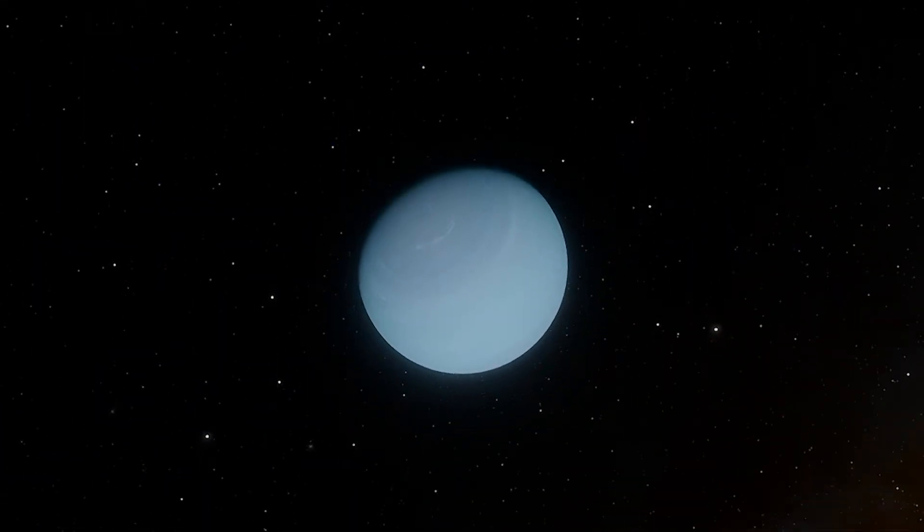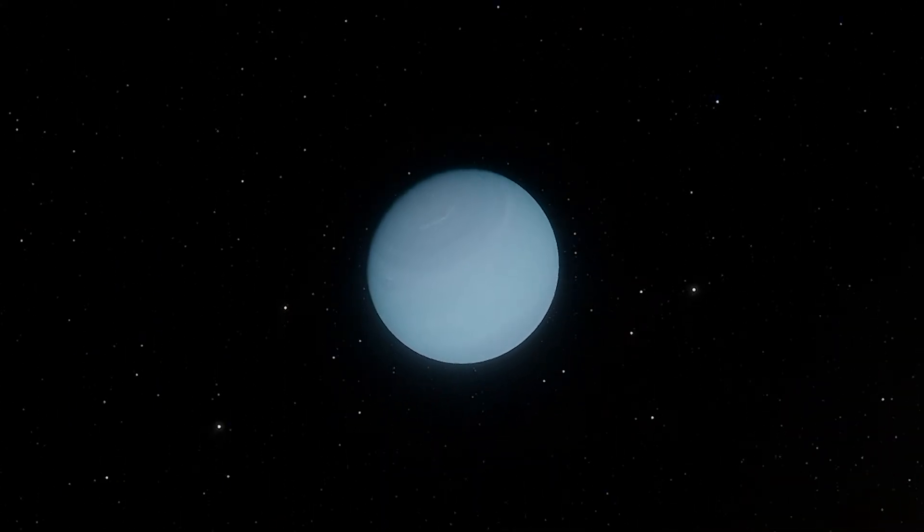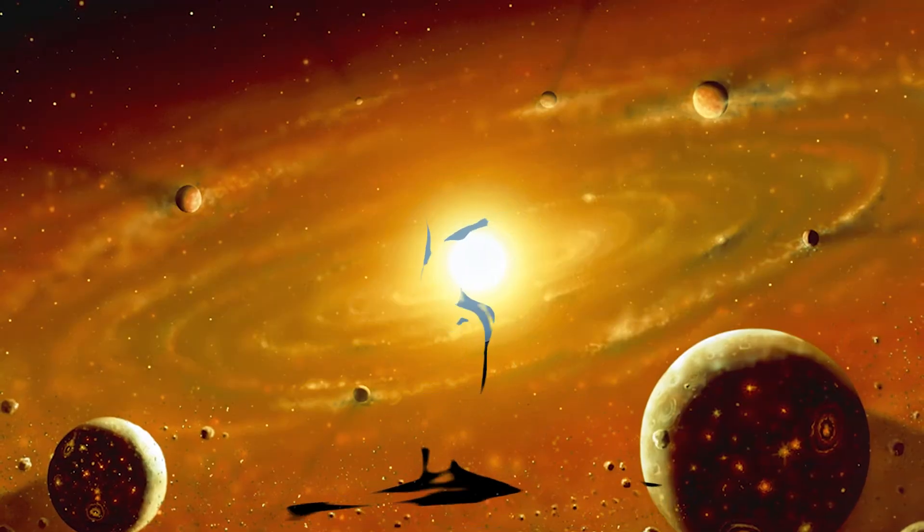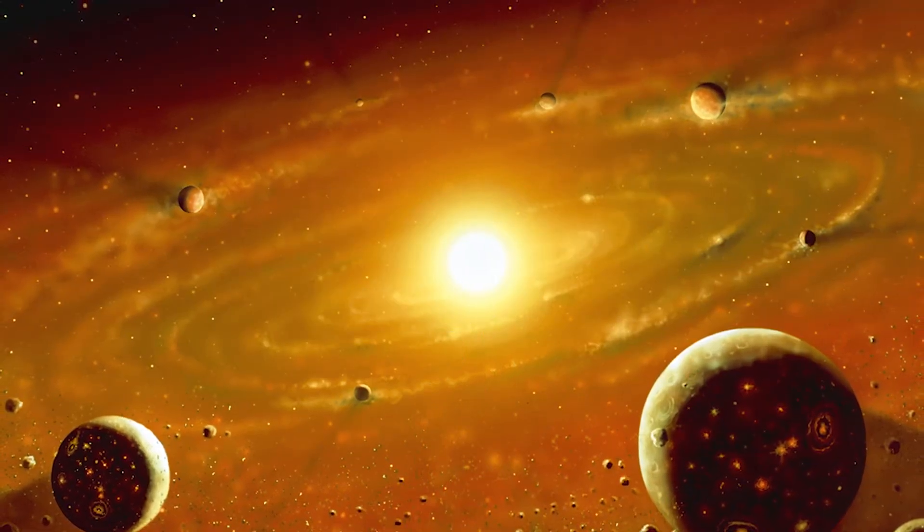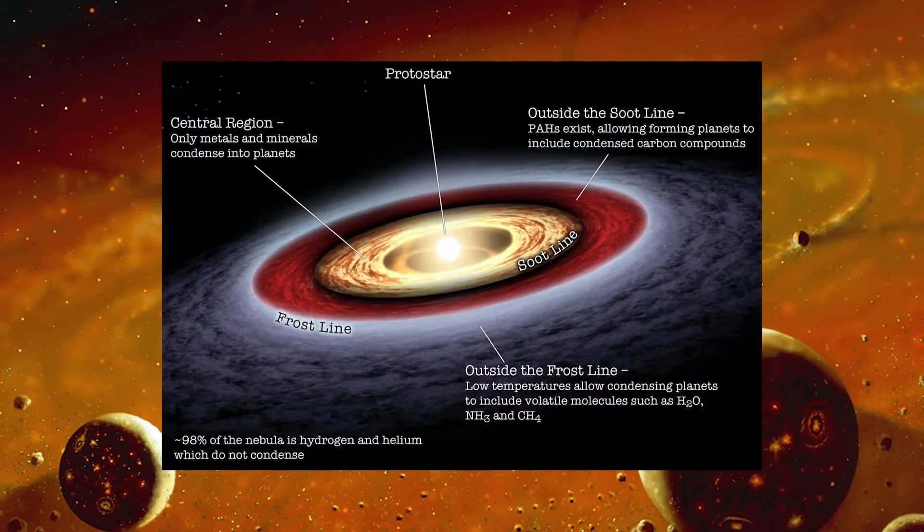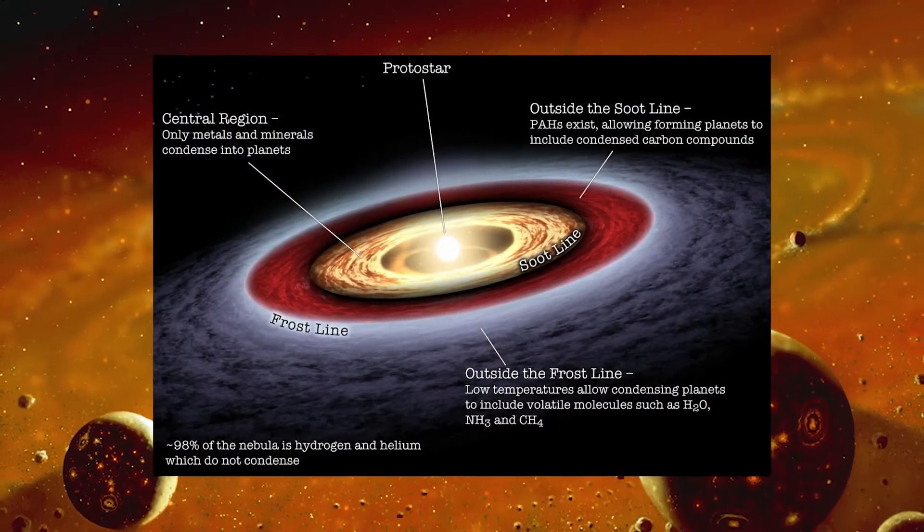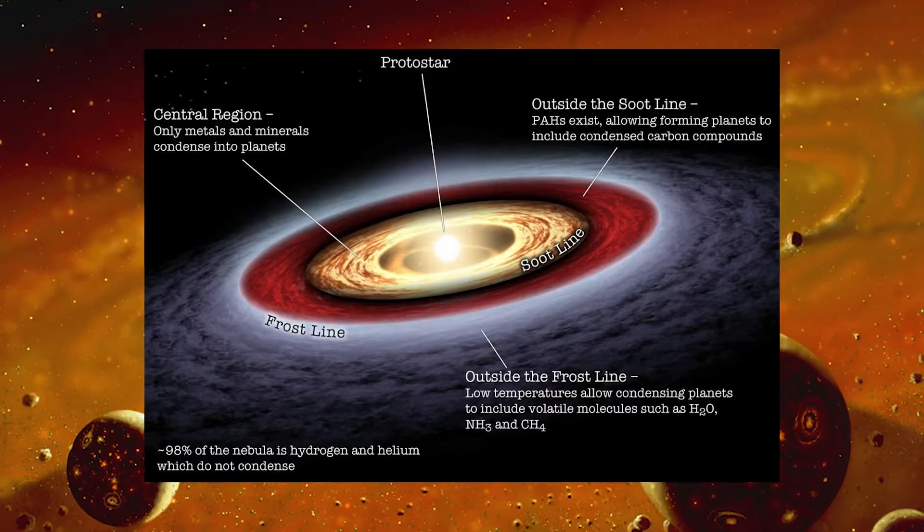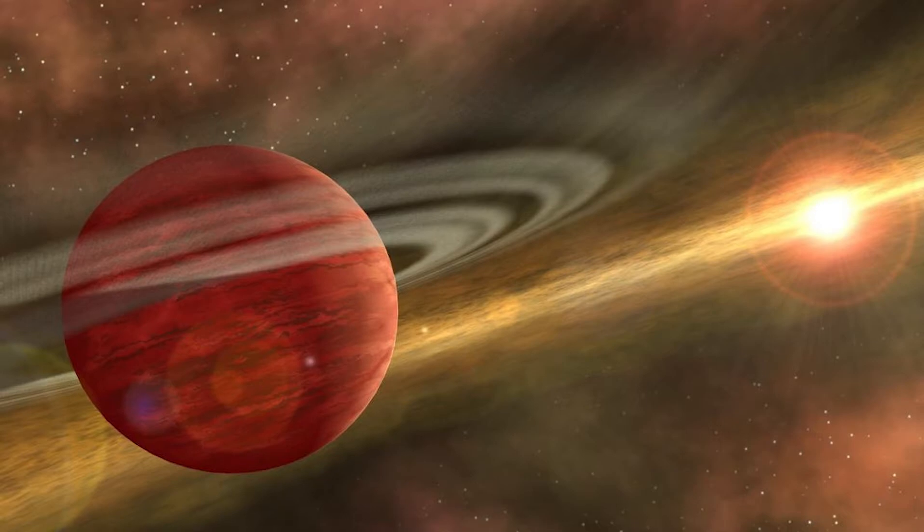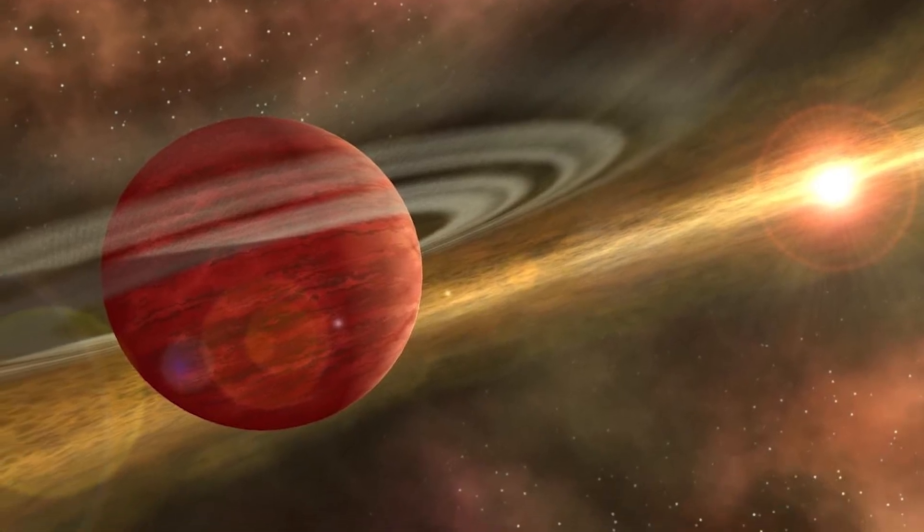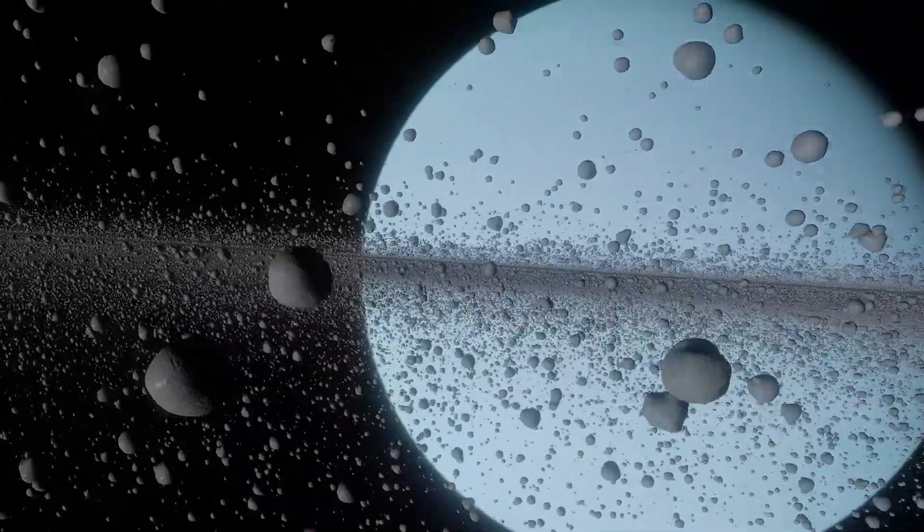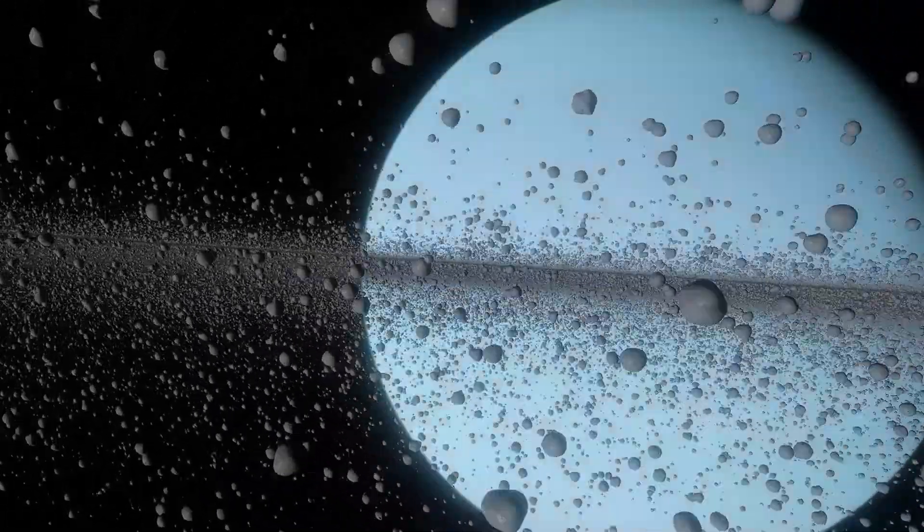In our solar system, the gas giants are contained to the outer solar system. But it turns out there is a specific reason for why this is the case. During planetary formation, gas giants form beyond a border we call the frost line. The frost line is the distance from the star at which volatile compounds such as water, methane and ammonia can condense into solid grains, hence the name. The state of the compounds affects what kind of planets form from them, with rocky planets forming later inside the frost line and gas giants forming first beyond it.